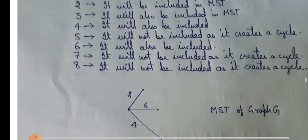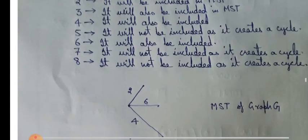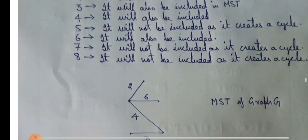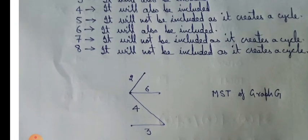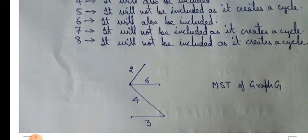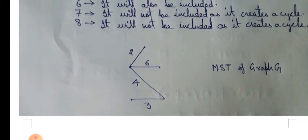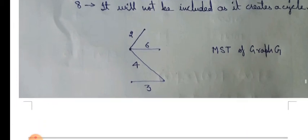5 will not be included as it creates a cycle and we don't have to include the edges that creates a cycle. 6 will also be included as it creates a cycle and 8 will also be included as it creates a cycle. So calculating the minimum distance 2 plus 6 plus 4 plus 3, so we get it as 15.